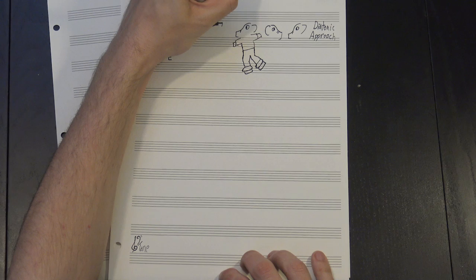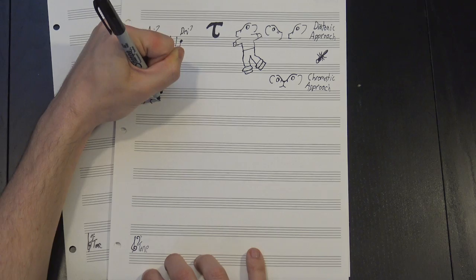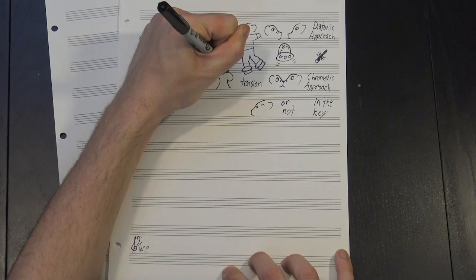Which is where the second technique comes in. This is called the chromatic approach, and here we instead use one of the notes that's right next to it, period. That is, we use a note that's either a half-step above it or below it. Sometimes this is in the key, but often it's not, and that's okay. It's a bit more out there, sure, but it helps build a bit of tension that you can then resolve on the next beat.